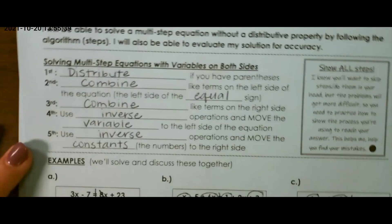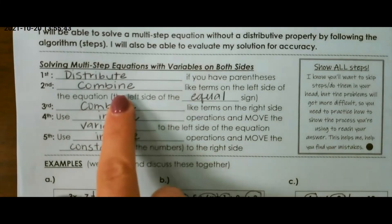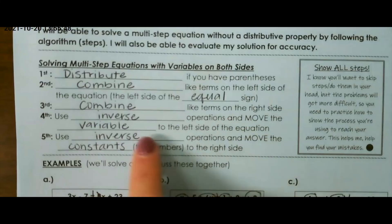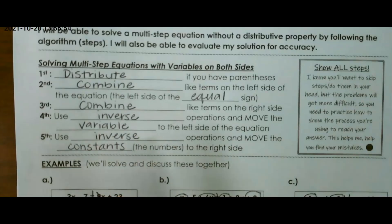To review, here are our steps again. Distribute if you have parentheses. Combine like terms on both sides of the equal sign, and use inverse operations to move the variable to the left, and use inverse operations to move the constants to the right.